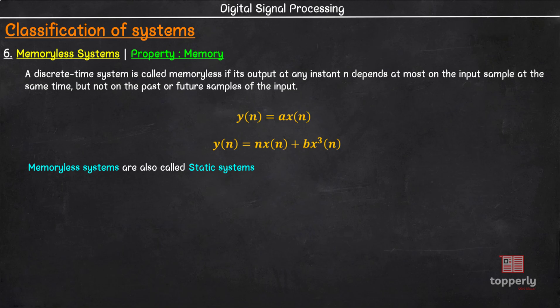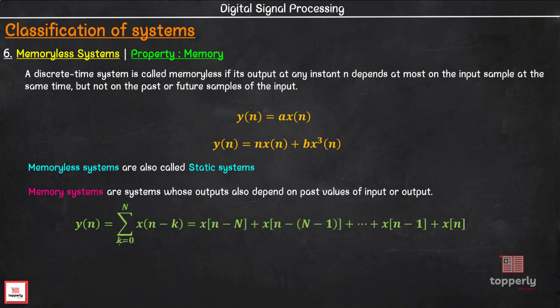Coming to memory systems, the output at instance n is also determined by the past inputs. For instance, if the system output at time n is determined by the input samples in the interval from n minus capital N to n, then the system is said to have a memory of duration capital N.